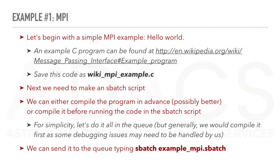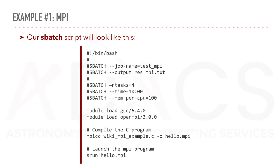The next step would be to create an SBatch script. Since the C program needs to be compiled before MPI can be run, we can either compile the program in advance, which would be better, or just compile it as part of the SBatch script. For simplicity, let's just do it all in the queue. So here's our script.